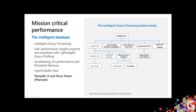I'll talk about table variable deferred compilation in a second, but you see other areas like batch mode processing for row store queries, approximate query processing for count distinct queries — really great for big data warehouse scenarios. And especially exciting in CTP 2.1 is scalar UDF inlining. If you're using scalar UDF functions and those have been a pain point for performance in stored procedures or queries, we can now inline those operations and make them much faster. That is a significant advancement in query processing for many people.